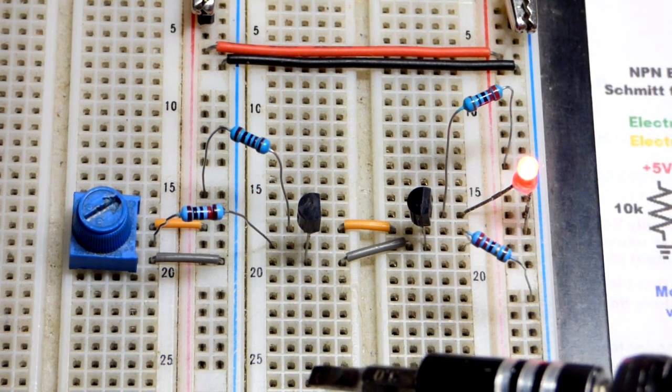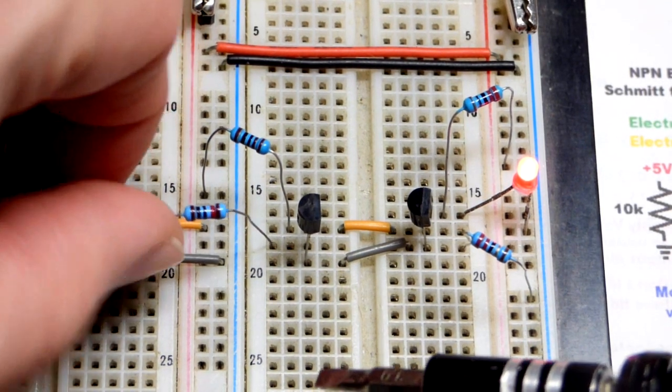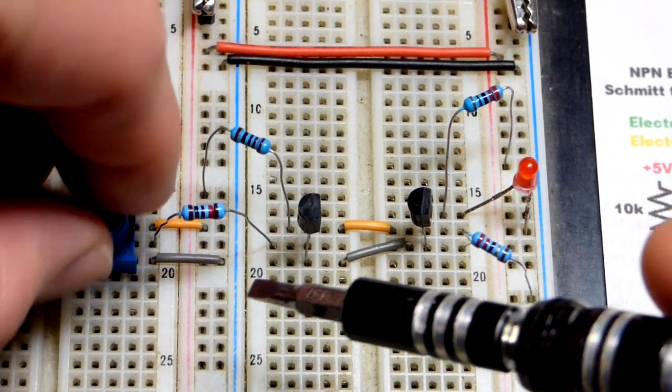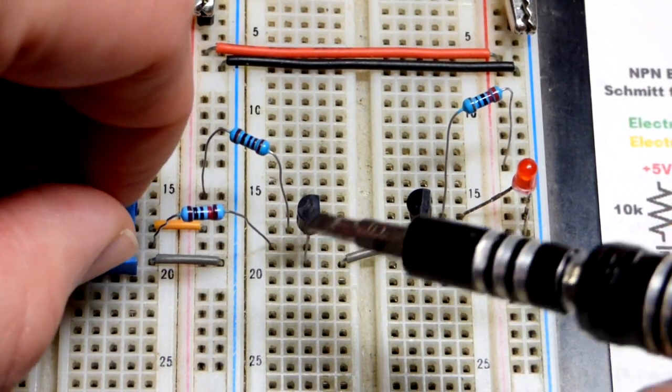But we don't have to do it that way. So now we will lower the trim pot, get close enough to ground, which we know turns that transistor off.